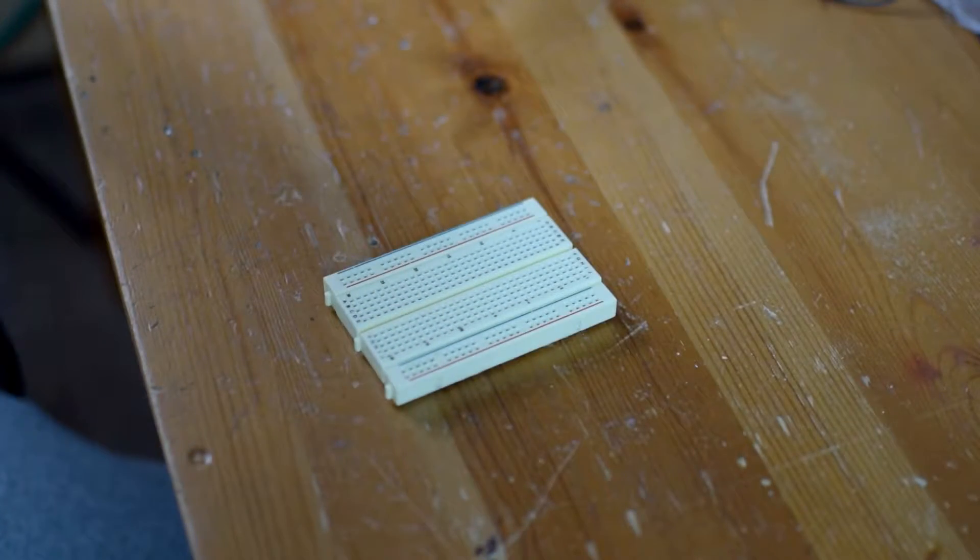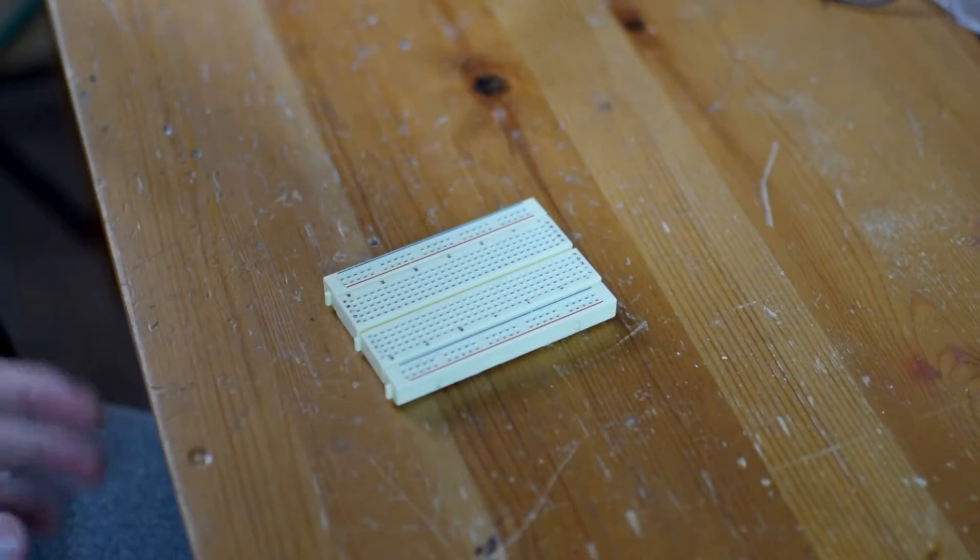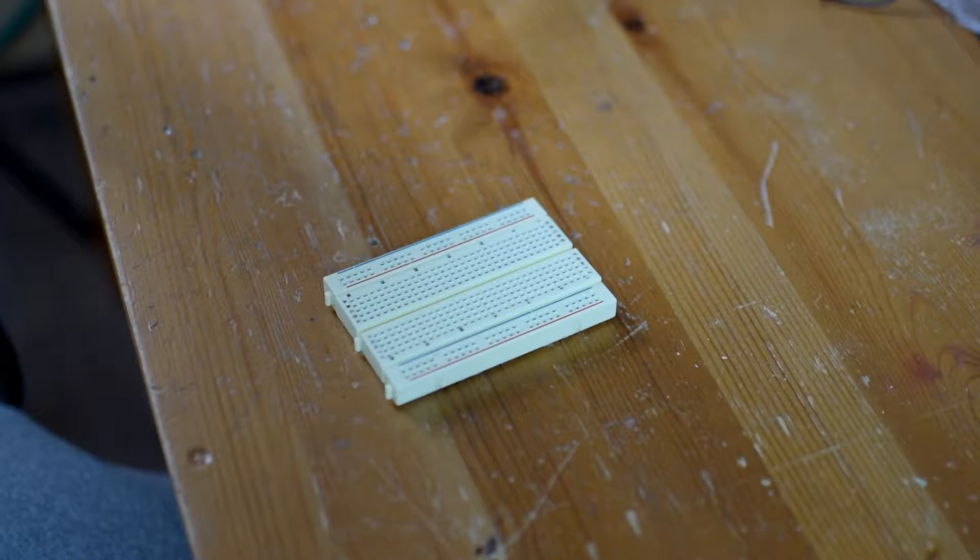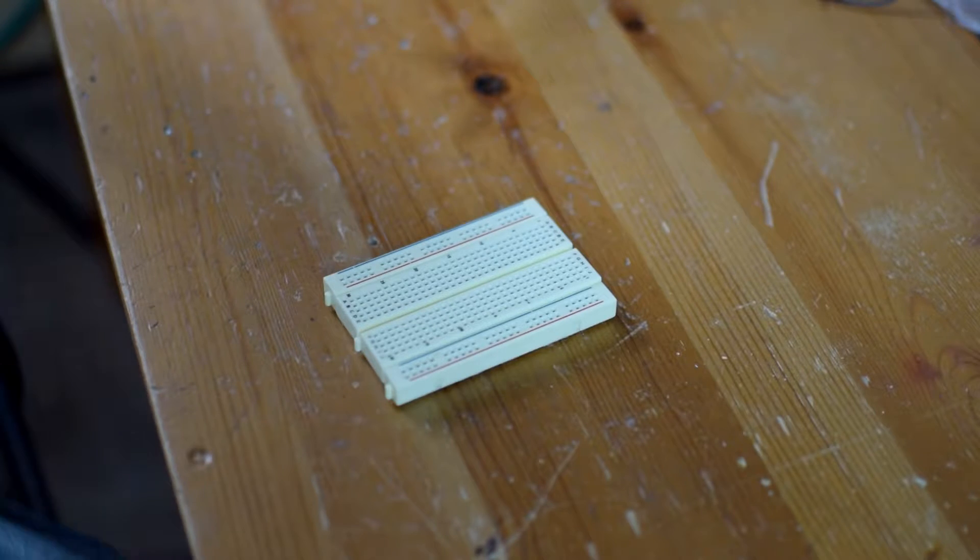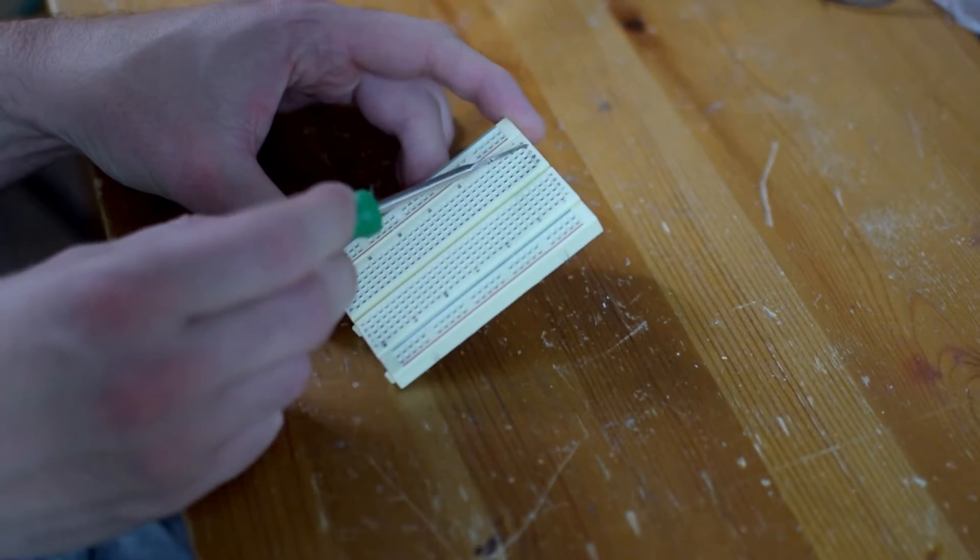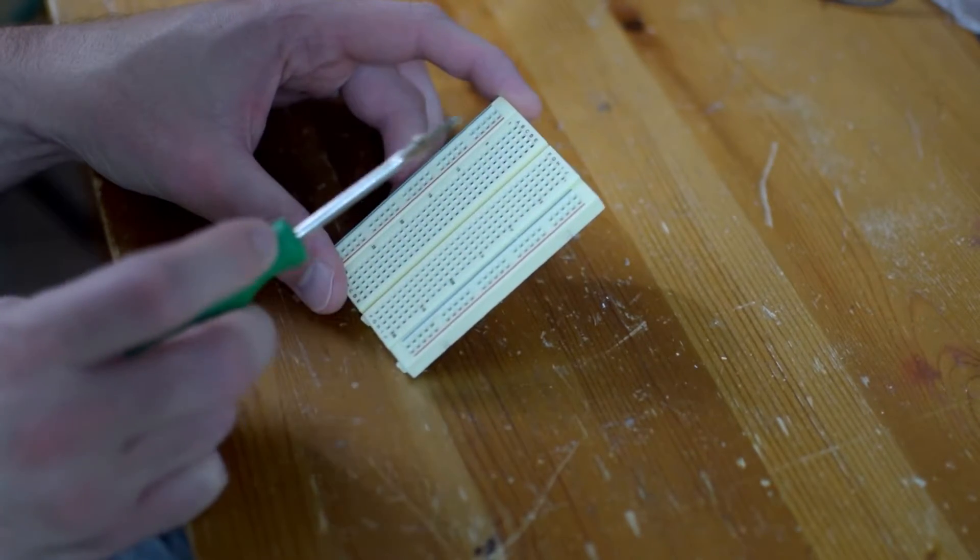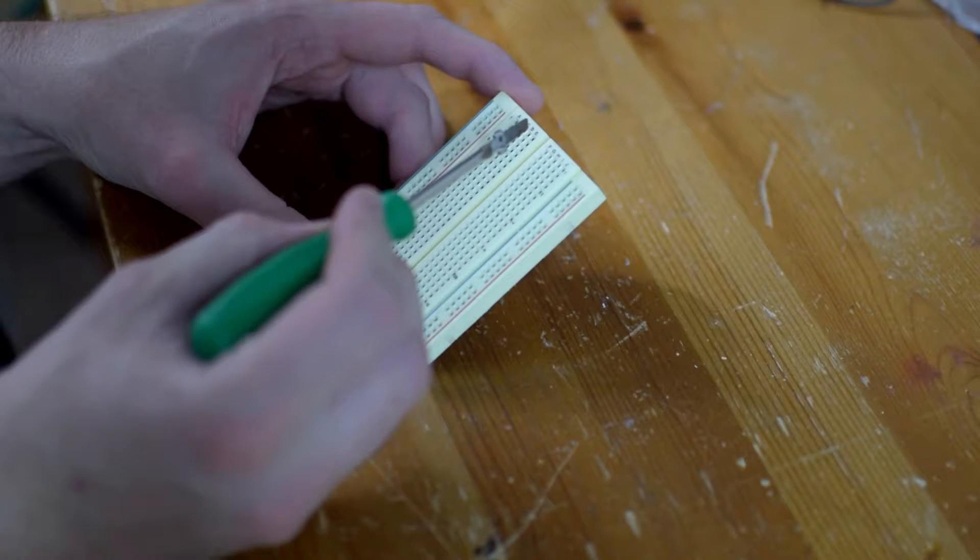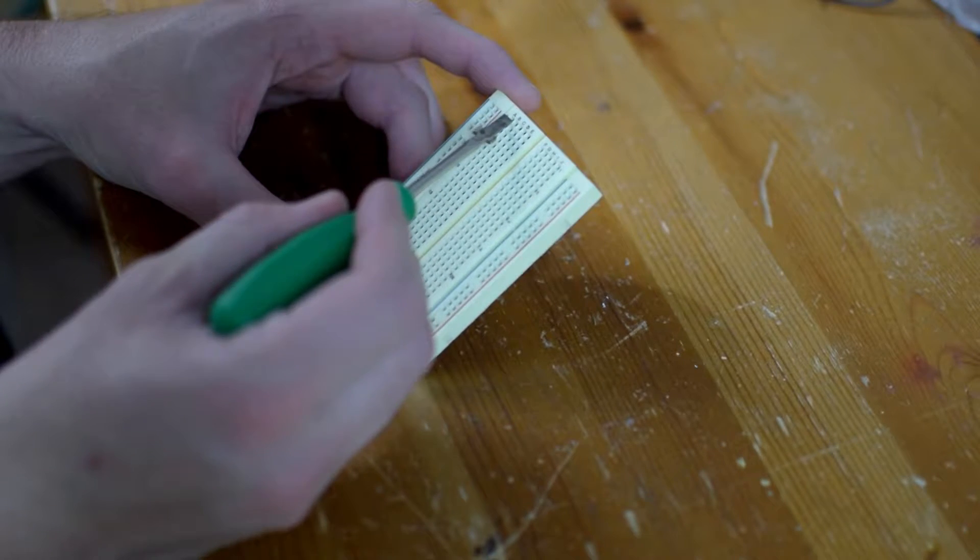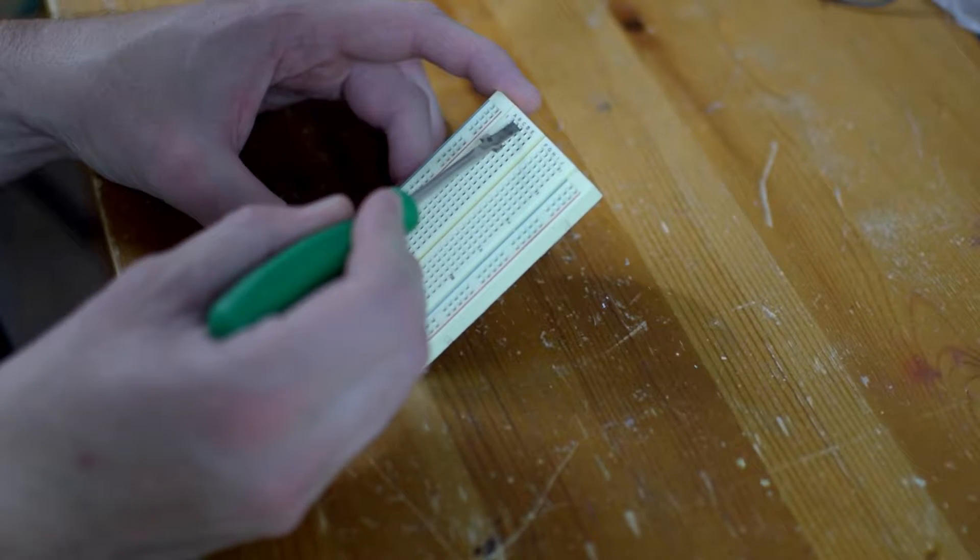Alright, so now we've got our breadboard in front of us. I'm going to just do a very quick and basic explanation for how these things work, for those of you that don't know. So we've got these rows and columns, and what happens is every node here in this row is connected.